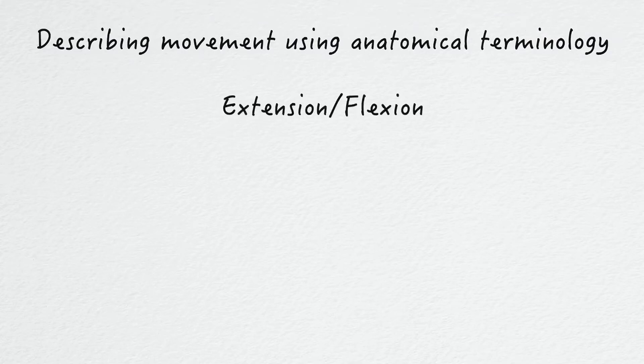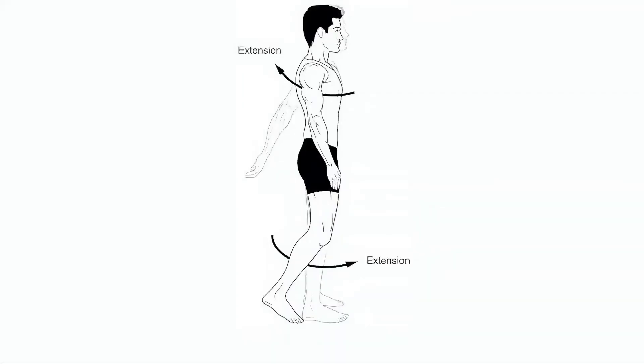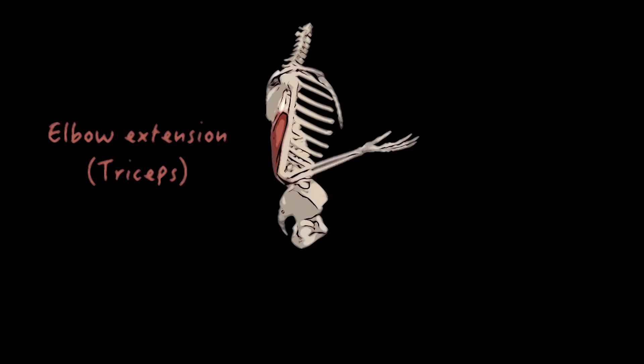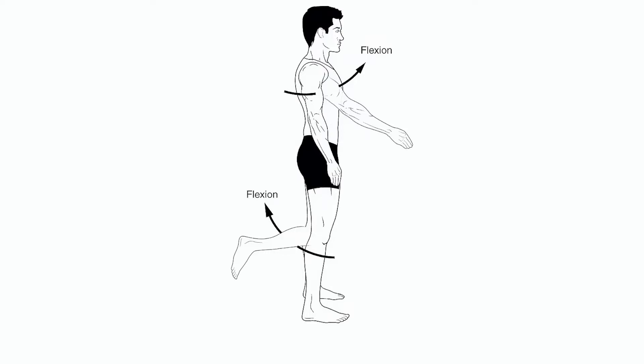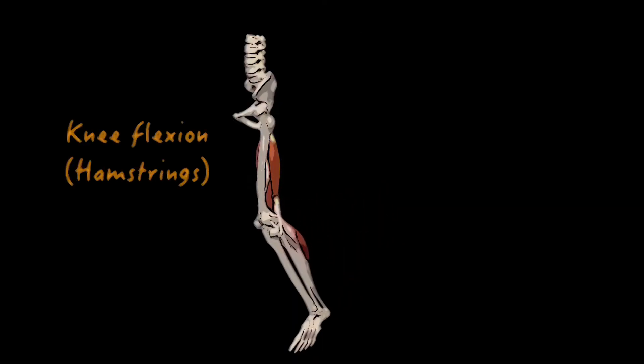Two terms which you may be familiar with are extension and flexion. Extension occurs when the angle between two adjacent segments in the body increases as the ventral surfaces of the segments move away from each other, and occurs in a sagittal plane about a frontal axis. An example is shown at the elbow. Flexion occurs when the angle between two adjacent segments decreases as the ventral surfaces approximate each other, and occurs in a sagittal plane about a frontal axis. An example is shown at the knee.